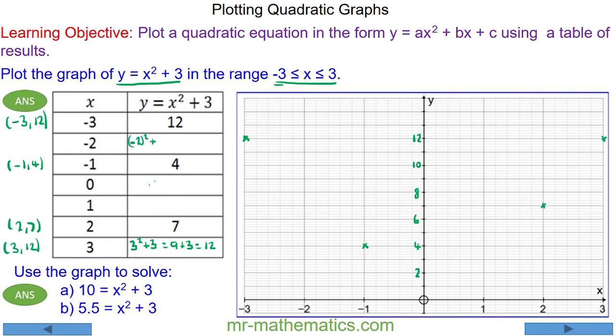So now we can work out the value of y when x equals negative 2. Negative 2 squared is 4, 4 add 3 is 7. And 0 squared plus 3 is 3. And 1 squared plus 3 is 4. So the coordinate would be 1, 4.